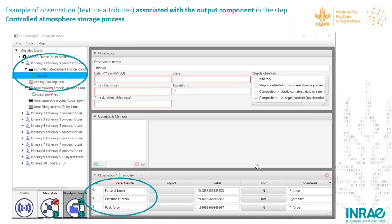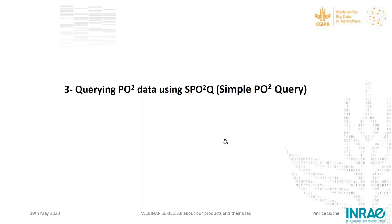We can also associate observations to steps. Here it is about the storage process step, and we associate information about the texture of a sausage. When you click on it, you see a table with three characteristics of texture: force and break distance, break and peak force, plus the associated numerical values and units of measure.